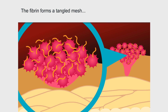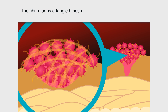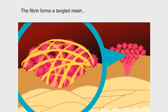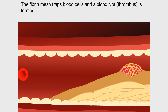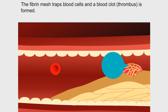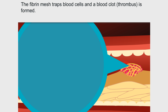The fibrin forms a tangled mesh. The fibrin mesh traps blood cells and a blood clot, or thrombus, is formed.